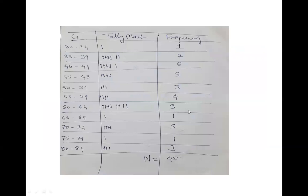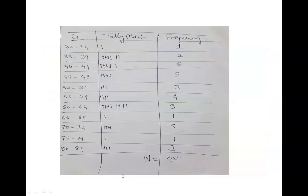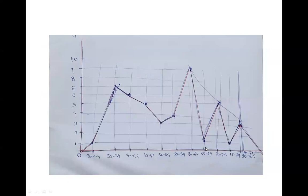The maximum frequency here is 9. The frequency will be on the y-axis, where we write one, two, three, four, five, six, seven, eight, nine, ten. Now we look at the class intervals 30 to 34, 35 to 39, and so on. Then we draw bars for each class interval - that will be the histogram.